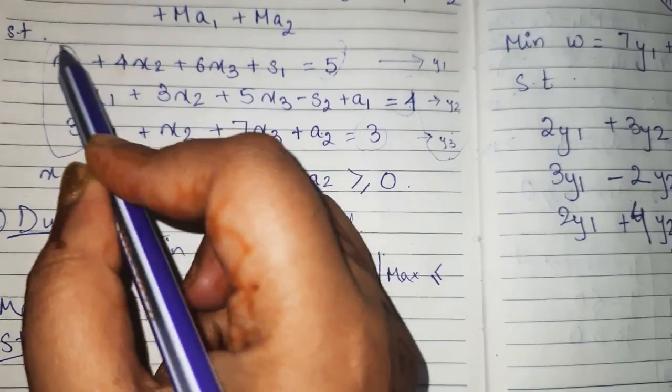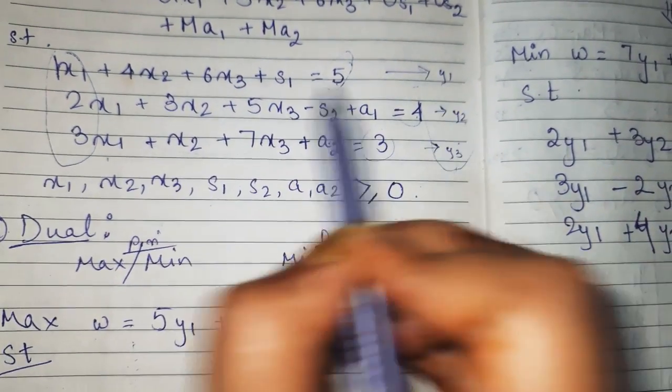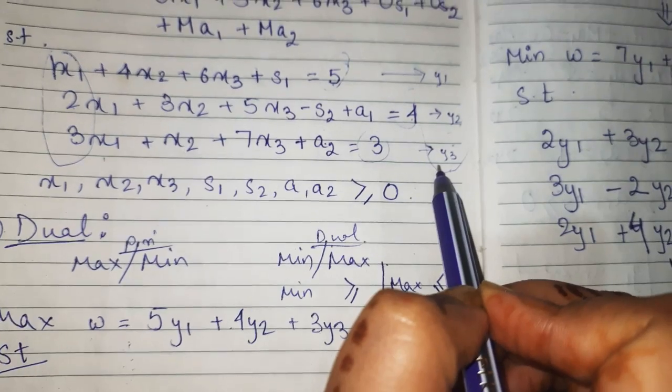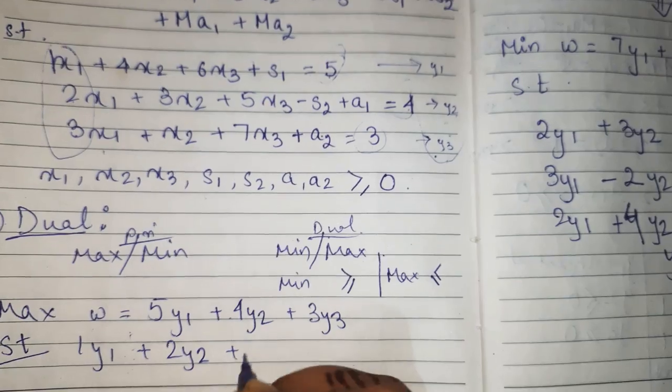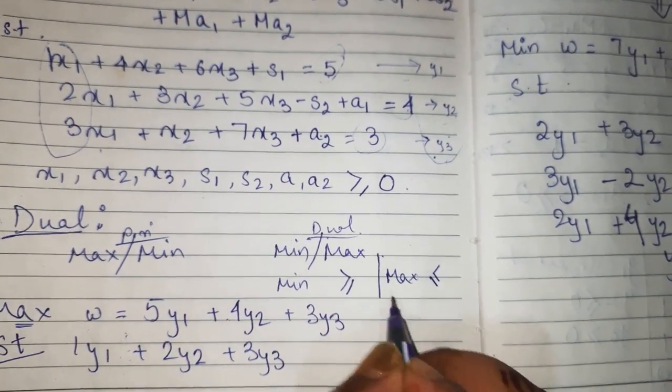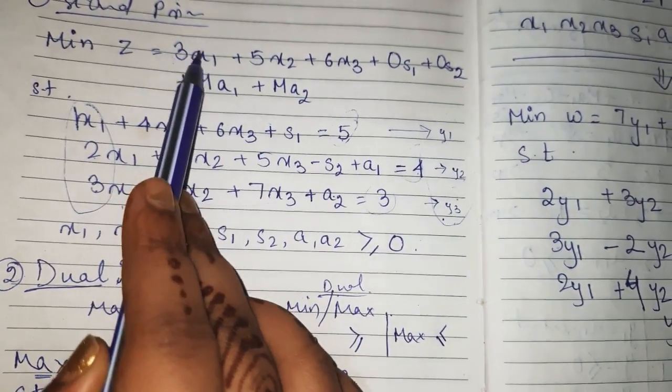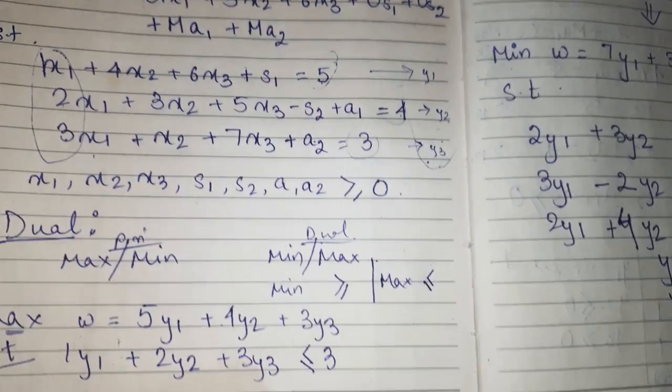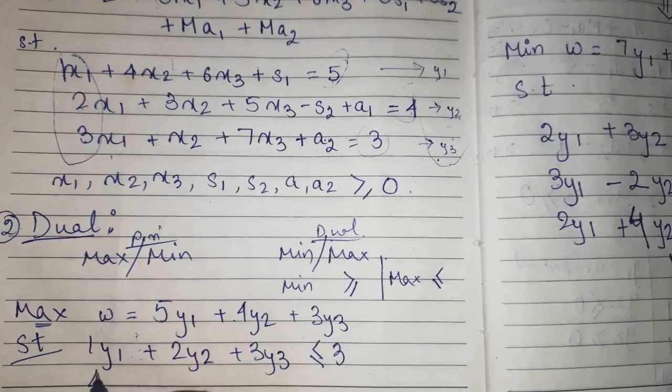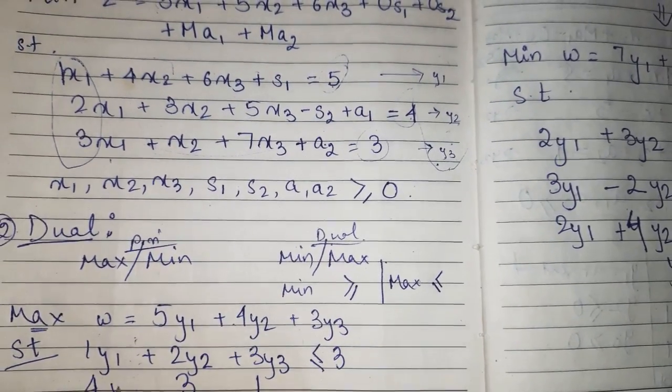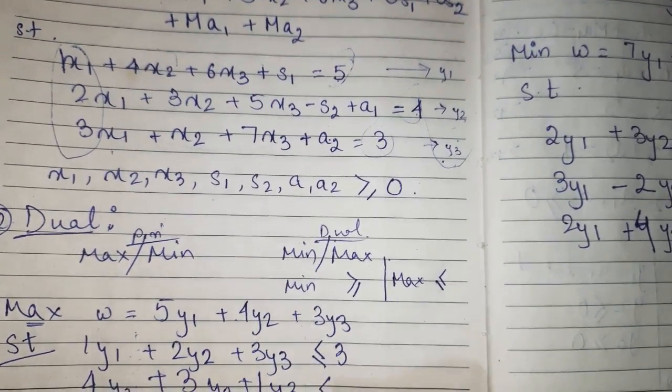Such that, now particularly for x1, here coefficient is 1: 1y1 plus 2y2 plus 3y3. For maximum it is less than or equal to the objective function coefficient, that is 3. Similarly, for the second constraint we will see 4, 3: y1, y2, y3 all positive is less than or equal to.